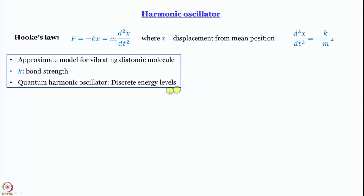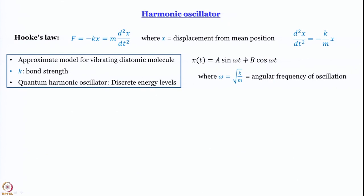Let us simplify Hooke's law: rearranging gives d²x/dt² equals minus k/m times x. This is a differential equation we can try to solve. The trial solution we use is x(t) equals a sin(ωt) plus b cos(ωt) — reminiscent of circular motion. Here ω is the square root of k/m, which is the angular frequency of oscillation.